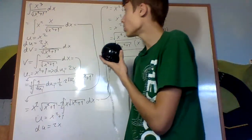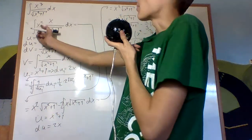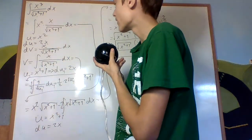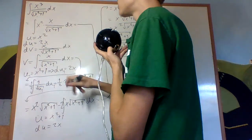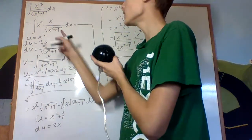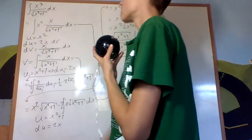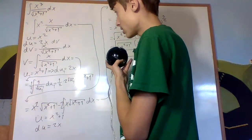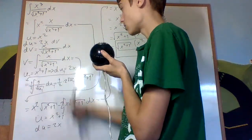We could also have done this by separating the integrand into x squared times x over the square root of x squared plus 1, letting u equal x squared so that du is 2x dx, and that dv is x over the square root of x squared plus 1, so that v is going to be that integral.